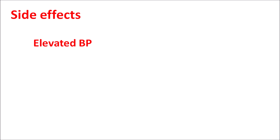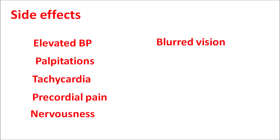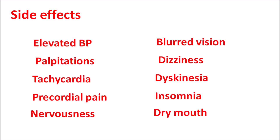Now let us see the side effects of diethylpropion. The first and most important side effect is elevated blood pressure. This drug can also produce pulmonary hypertension resulting in dyspnea and edema. It can also increase palpitations, awareness of heartbeat, tachycardia, and increased heart rate. Precordial pain can also be observed due to pulmonary hypertension. All these are because of increased sympathetic stimulation and should be closely monitored. Similarly, this drug can produce central side effects such as nervousness, blurred vision, dizziness, dyskinesia, insomnia, and dry mouth.